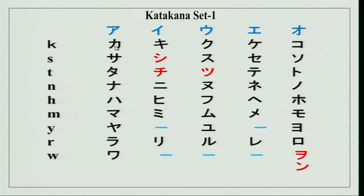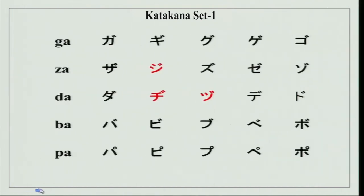So it is ka, ki, ku, ke, ko — and it goes right till the end till n, as it is in hiragana. Again, we have extra sounds here in the katakana series — Set 2. The sounds are ga, za, da, ba, and pa.